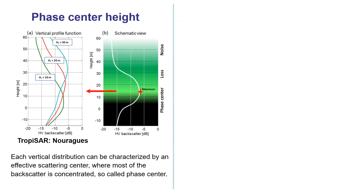A convenient way to observe the forest vertical structure is to use a forest profile, which is basically a slice of the multiple-layer data. We observe that the vertical distribution has the shape of a Gaussian spreading that arises from the location where most of the backscatter is concentrated. We call this position the phase center. For example, we show vertical backscatter distributions with respect to the phase center at 10 meters, 20 meters, and 30 meters, as you can see in this schematic view very clearly.